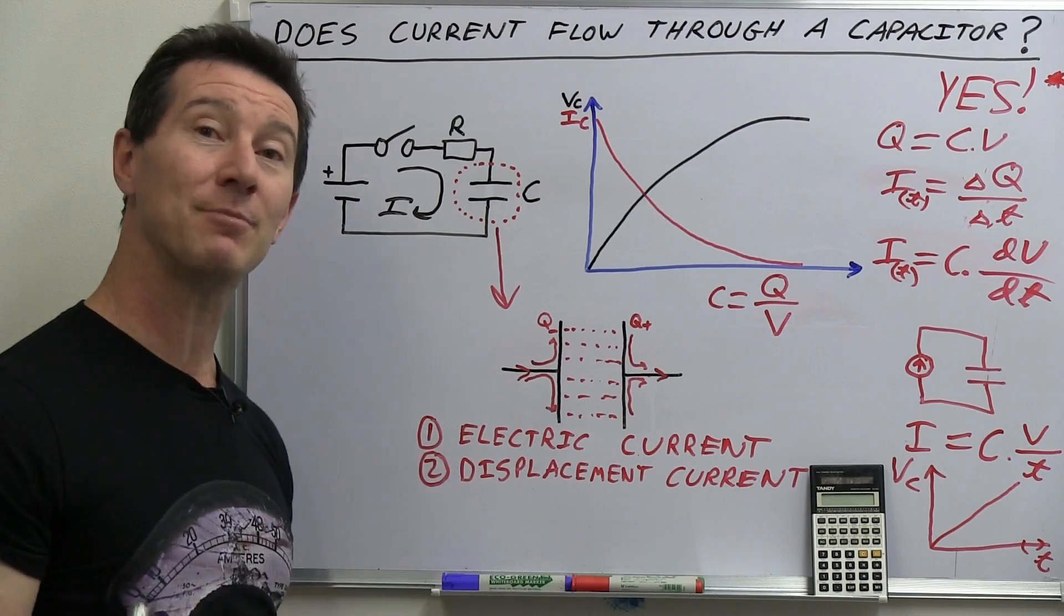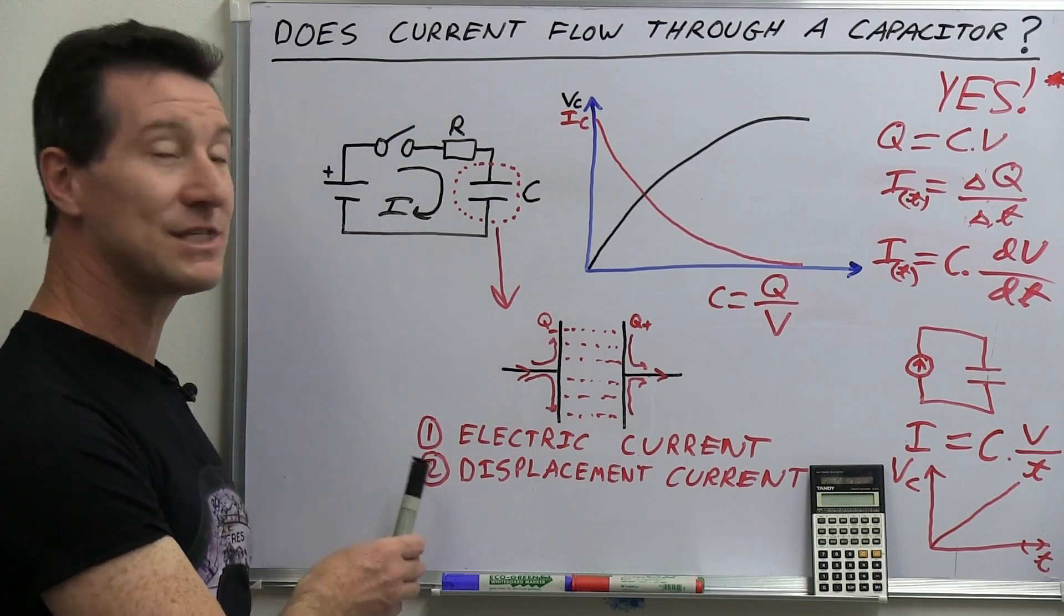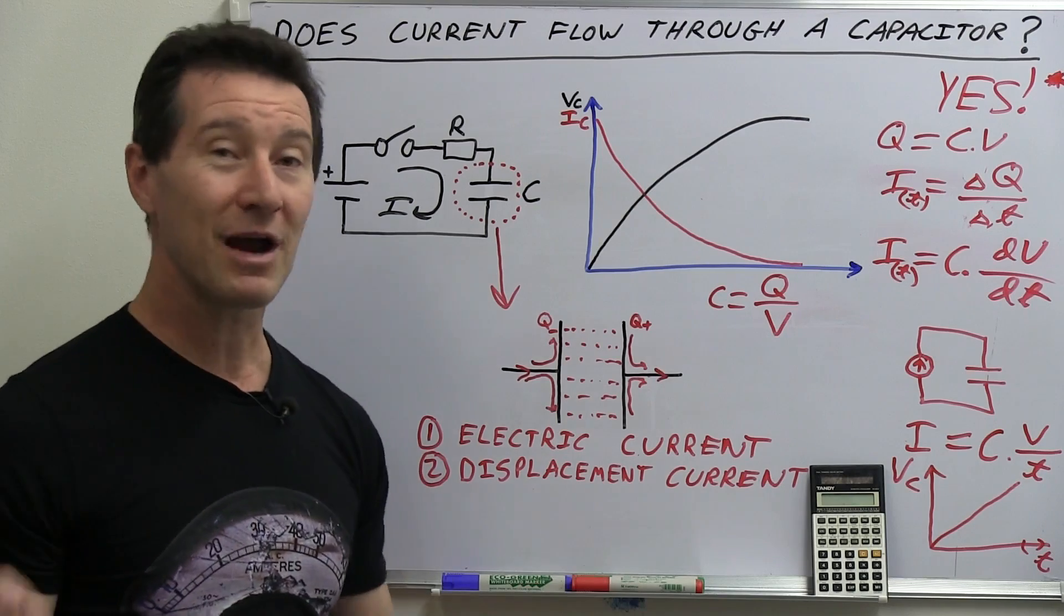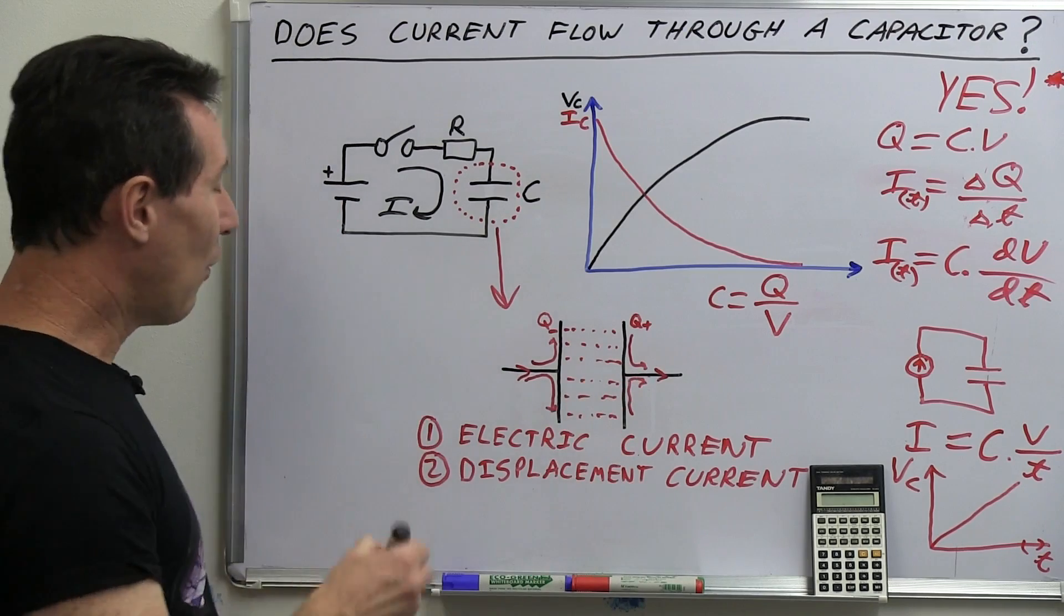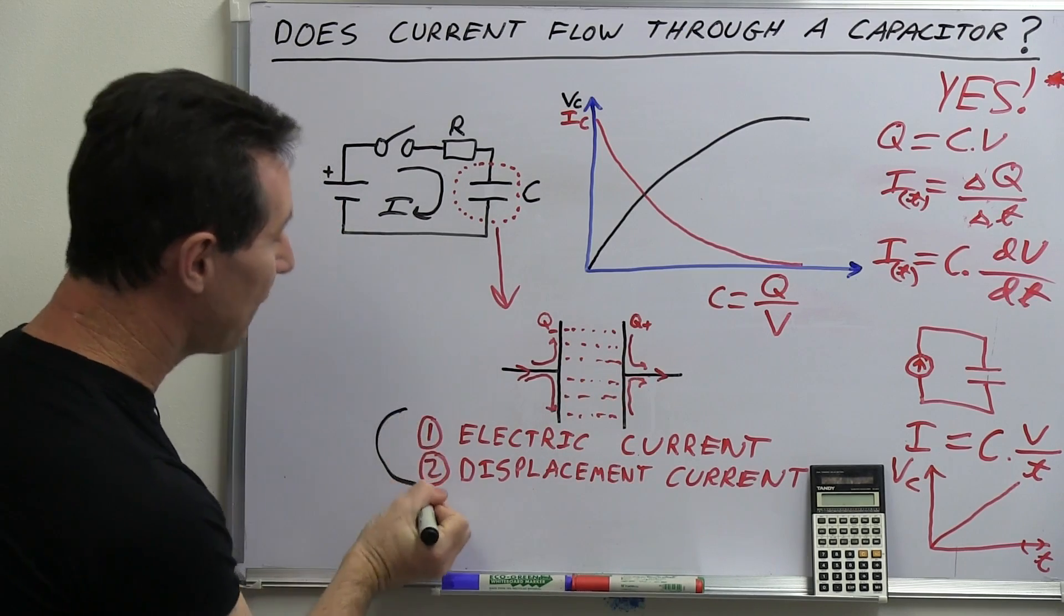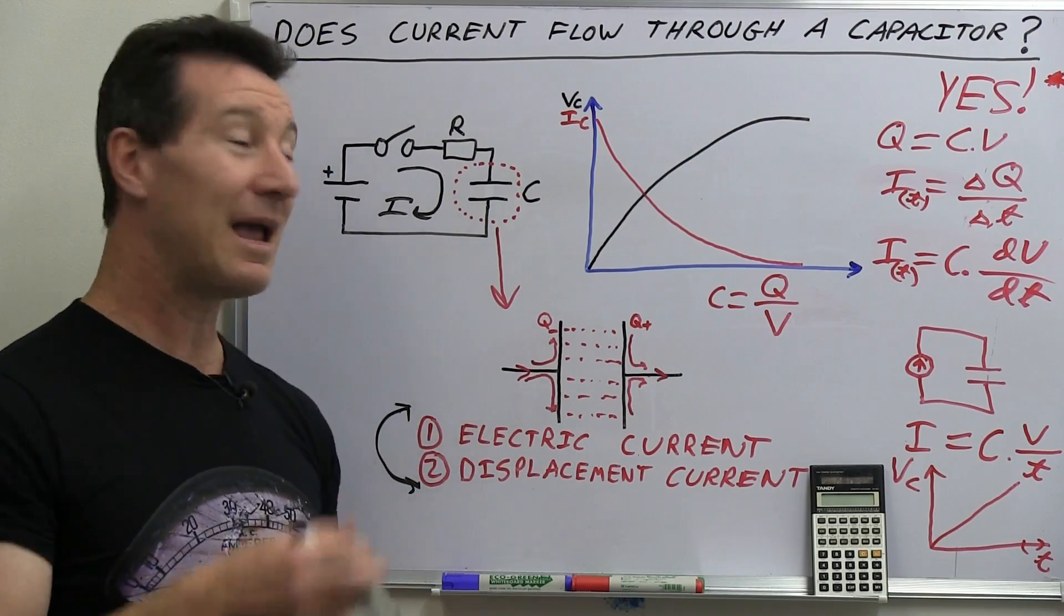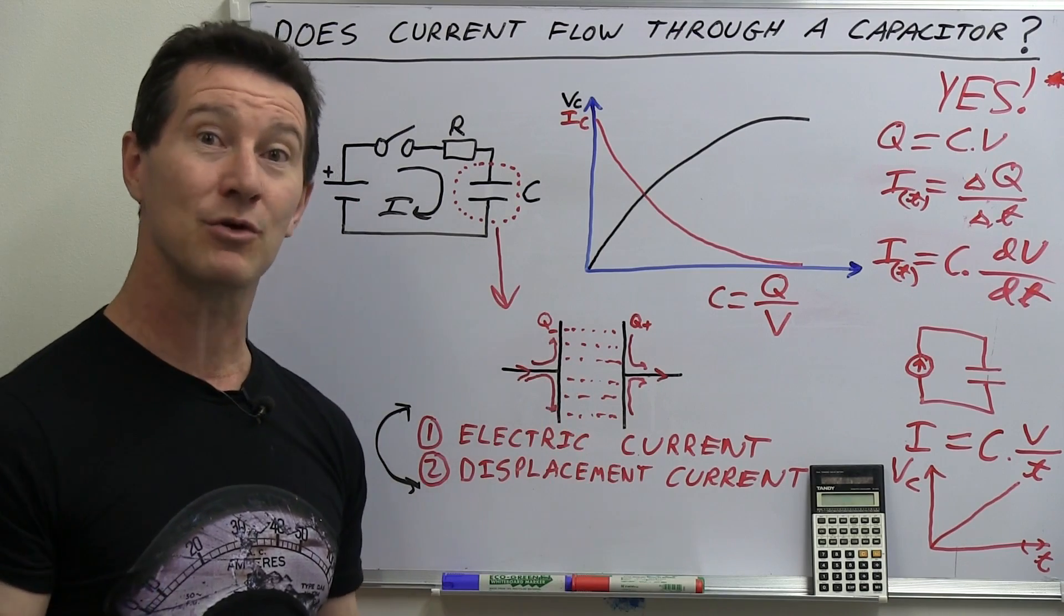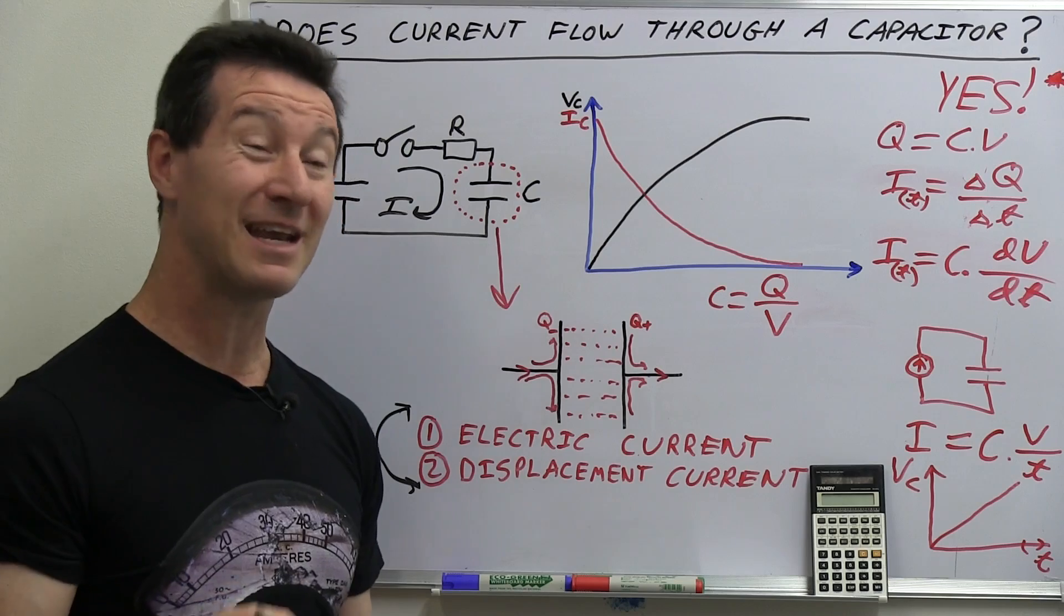So what Maxwell came up with is a concept called displacement current. And that gives us a second definition of current. And in practical electronics, when anyone uses the term current, they're including both of these terms under the same umbrella. And to try and separate them, then you start getting away from practical electronics into theoretical physics. And it gets nasty.